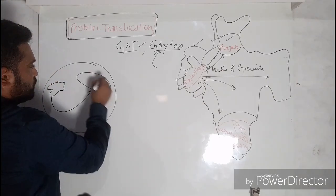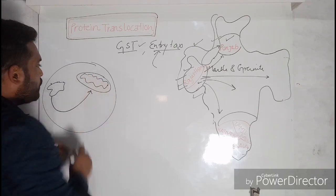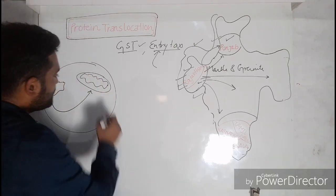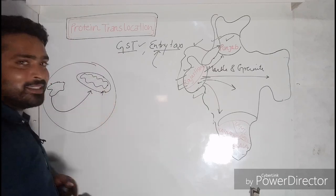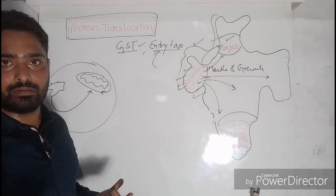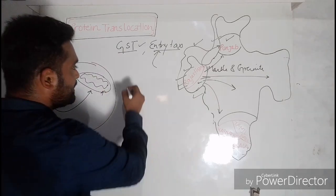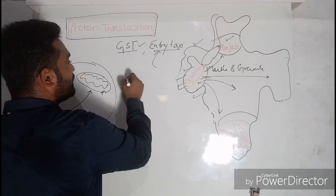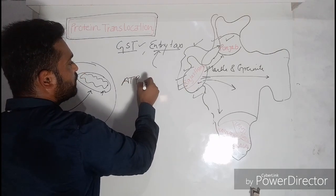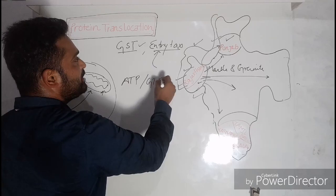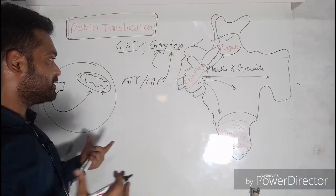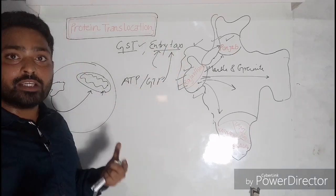Similarly, in this cell what's happening is that we have here RER. The newly synthesized proteins, say we are delivering those proteins to mitochondria. For the entry of those proteins into this mitochondria there is a need of something, and that is the use of ATP or GTP in the form of entry tax.